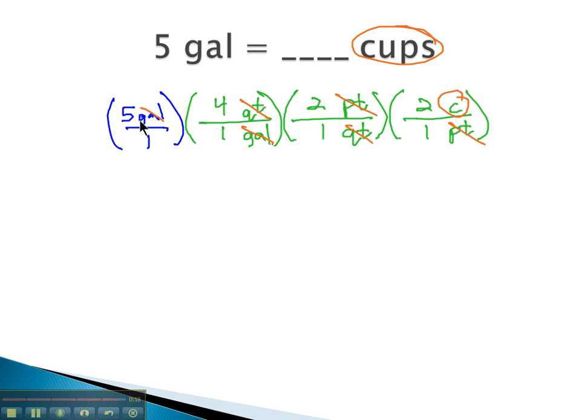We're ready to multiply straight across. 5 times 4 times 2 times 2 is 80 cups over 1. 1 times 1 times 1 times 1, or just 80 cups for our solution.